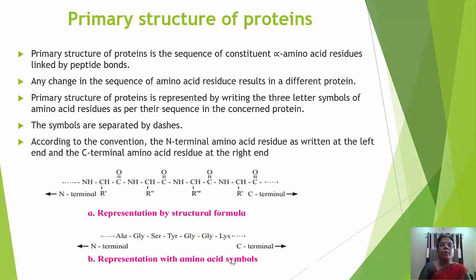First, we are going to see the primary structure of protein. The primary structure of protein is the sequence of constituent alpha amino acid residues linked by peptide bonds. Any change in the sequence of alpha amino residues results in a different protein. The primary structure is represented by writing the three-letter symbol of alpha amino acid residues as per their sequence, separated by dashes. By convention, the N-terminal amino acid residue is written at the left and the C-terminal at the right end.